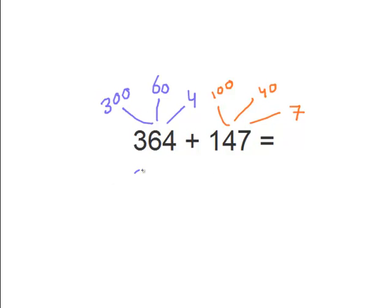Okay. So let's solve this now. So let's first do the biggest numbers. So 300 plus 100 equals 400. Okay. Cross them off.